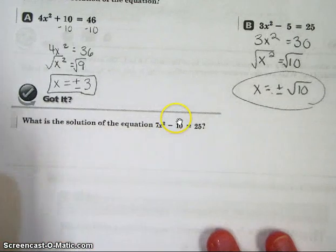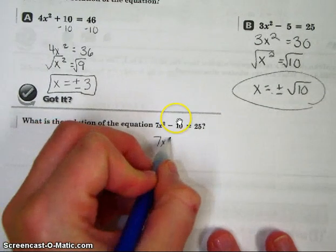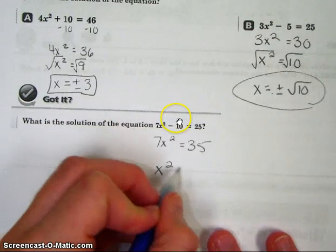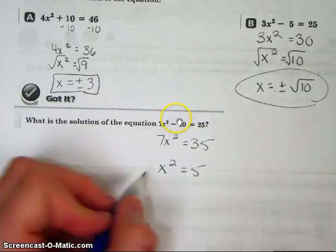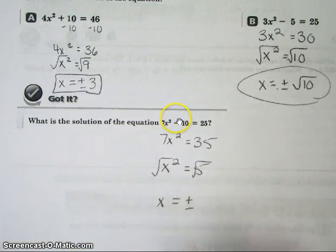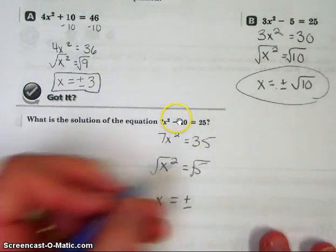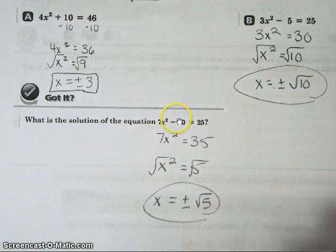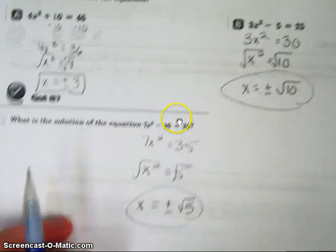Move on. The Got It, Problem 1 Got It. Isolate x squared by adding 10 first and getting 35. Divide by 7. You get 5. Take the square root. You get plus and minus. There is no square root of 5. So you just write square root of 5. The front page isn't too hard. But remember, none of these had an x.